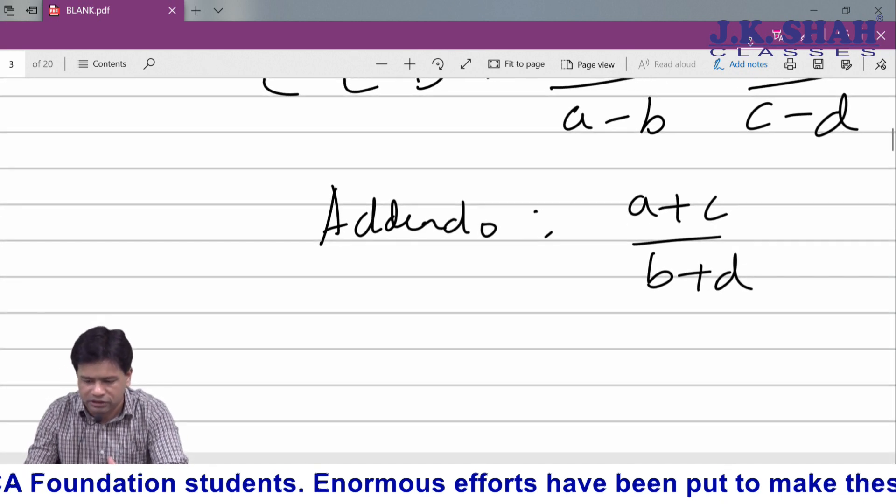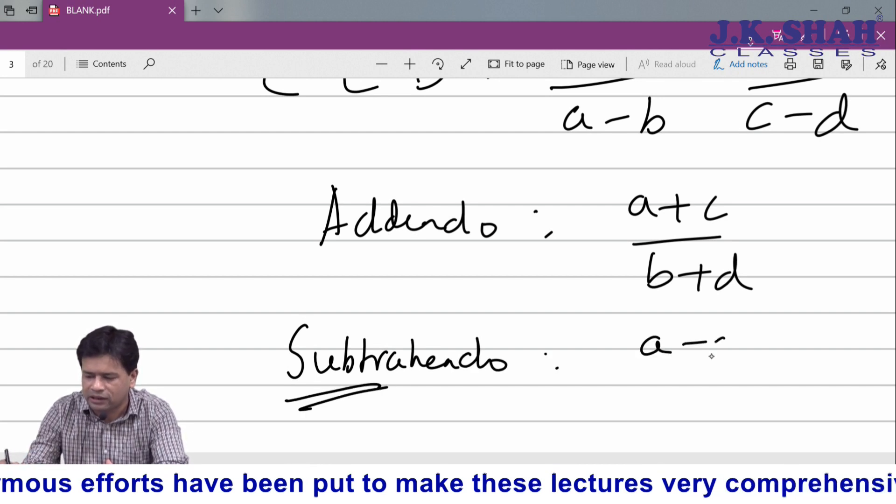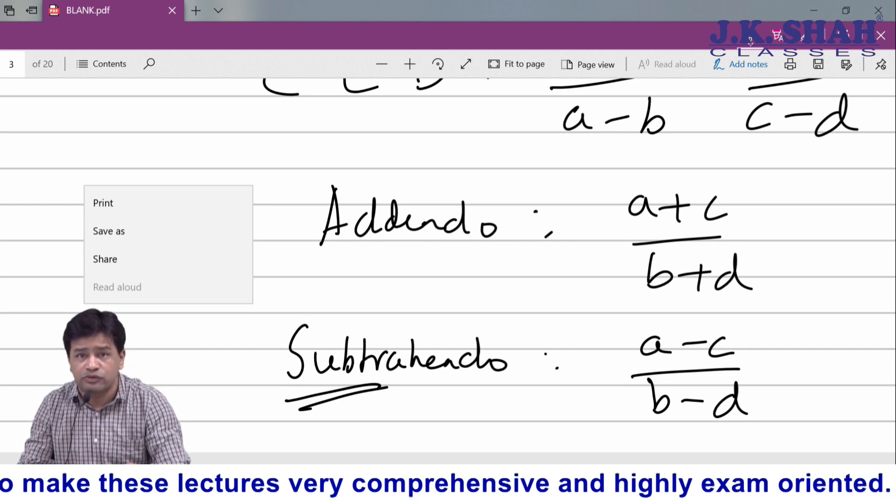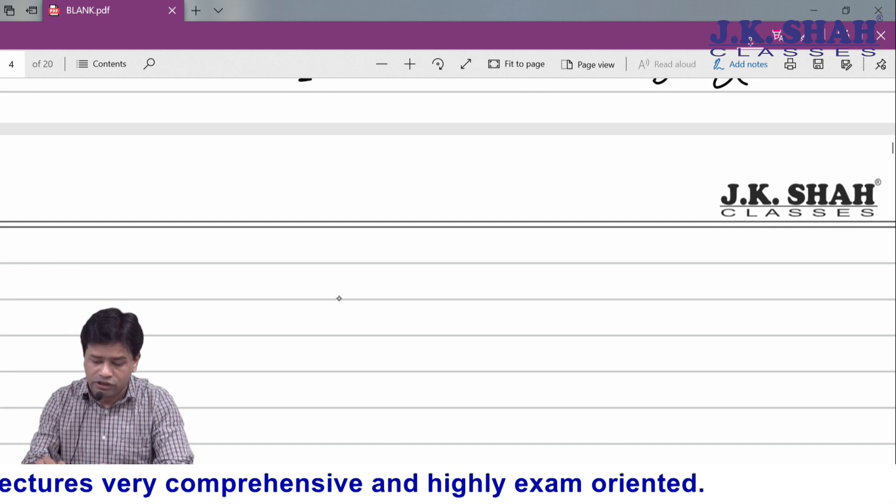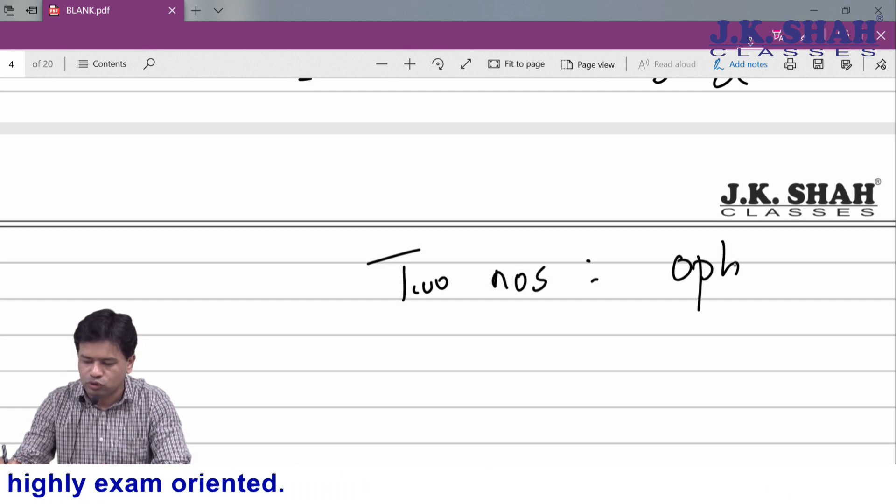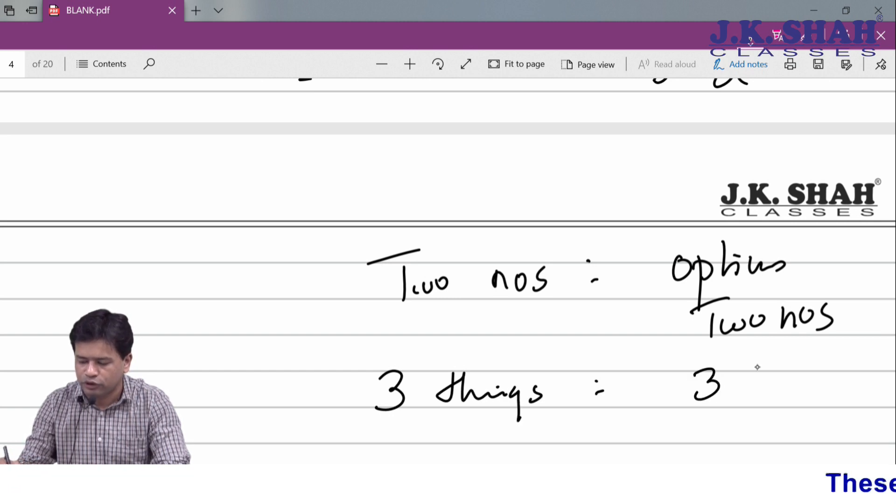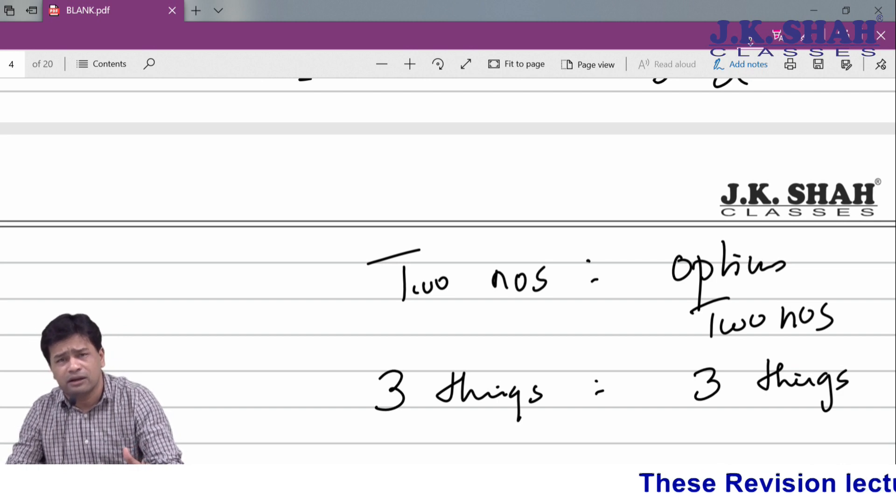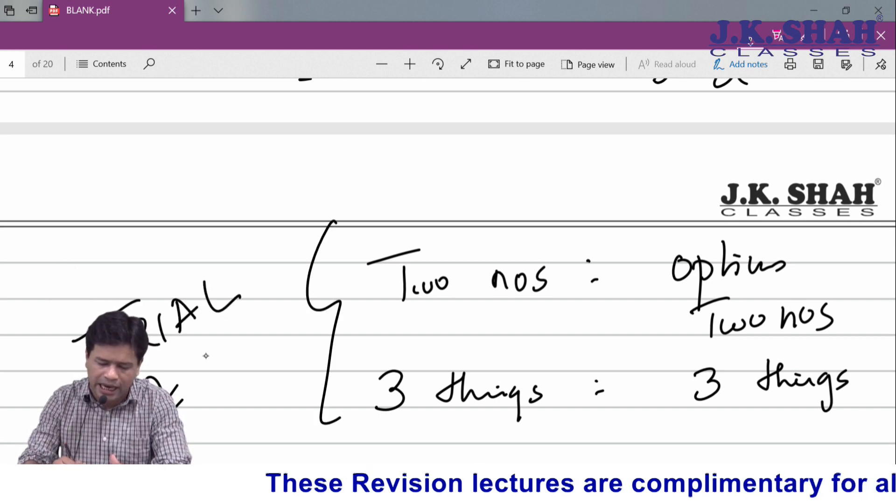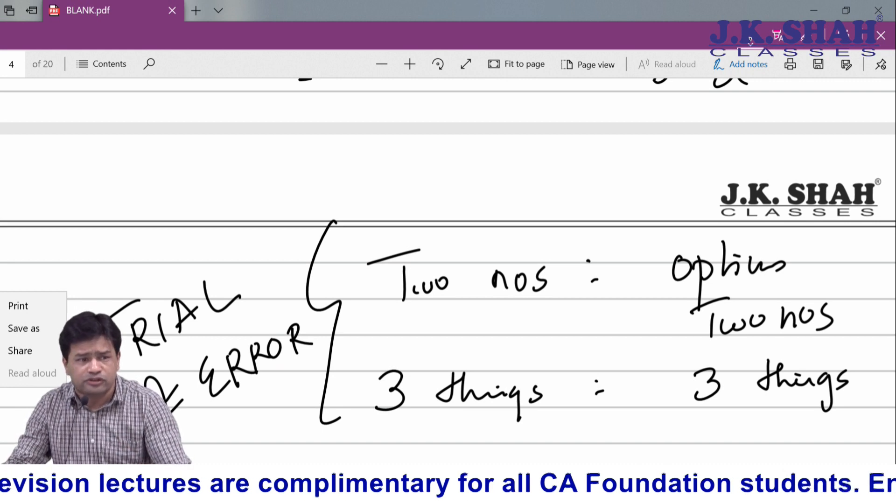Subtrahendo - the word subtrah itself suggests subtract: a minus c upon b minus d. In ratio and proportion, you could have many questions which can be solved by trial and error. Remember, if a question is speaking about two numbers, options also have two numbers. If the question is speaking about three things, options also have three things - ages, angles of triangle, salary, income ratio, expense ratio. All such questions will be solved by trial and error. With this we finish the first part of the chapter: ratio and proportion.